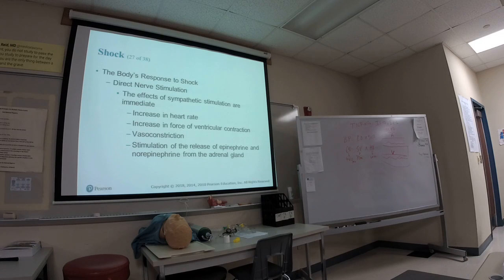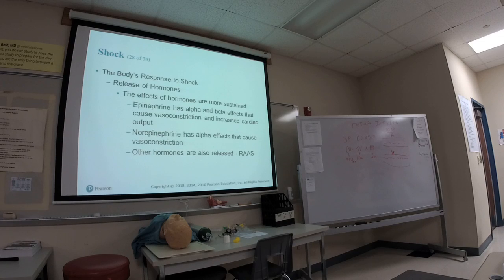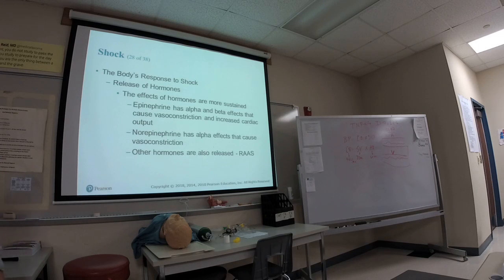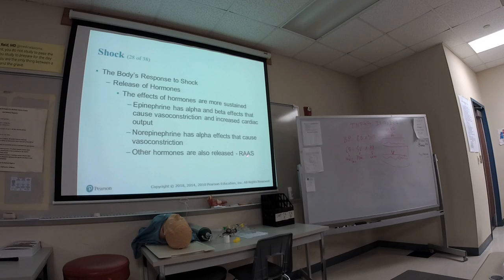The RAAS — Renin-Angiotensin-Aldosterone System — is a longer-term compensatory mechanism. The kidneys release renin, which triggers this system to raise blood pressure. The immediate compensation is increased heart rate; if needed, the kidneys also help via the RAAS. The system starts with angiotensin-1, converts to angiotensin-2 in the pulmonary system, and leads to aldosterone release.